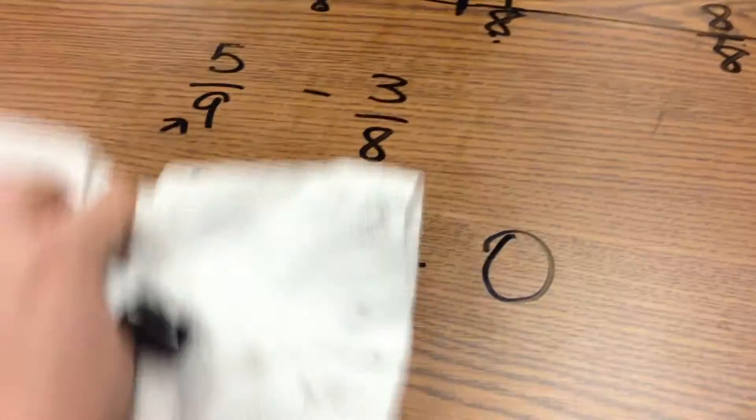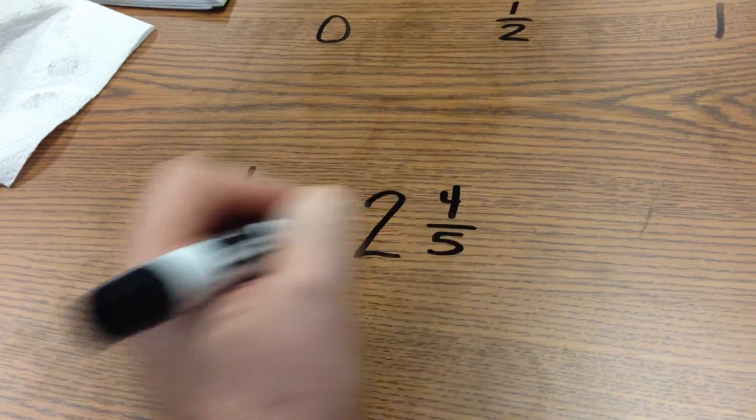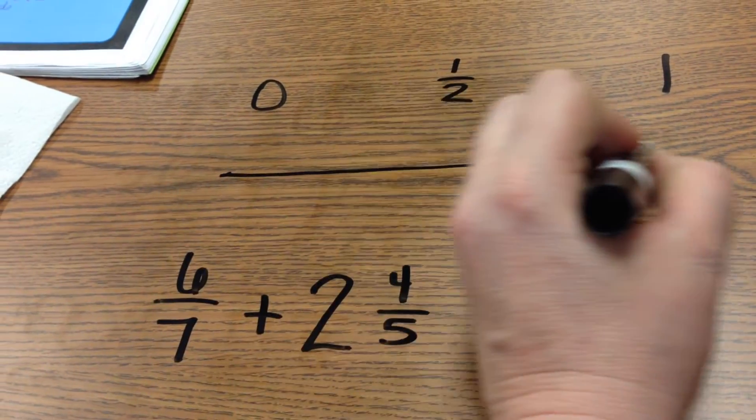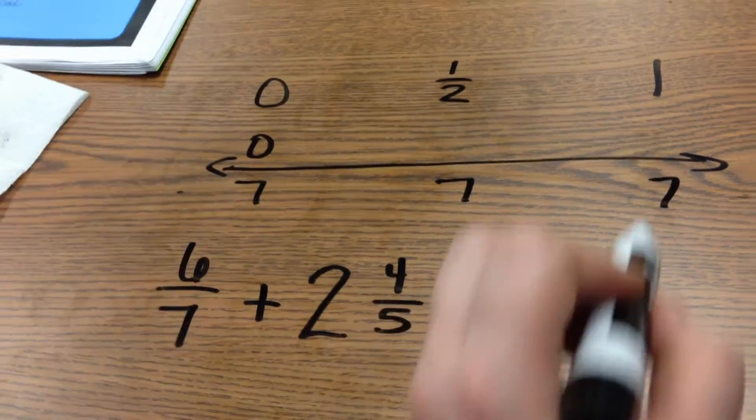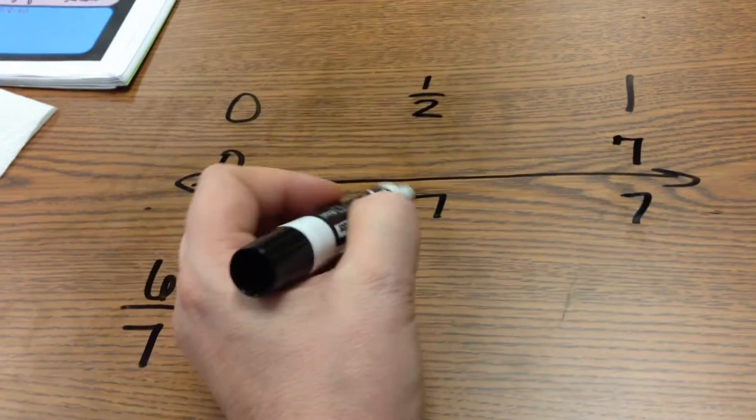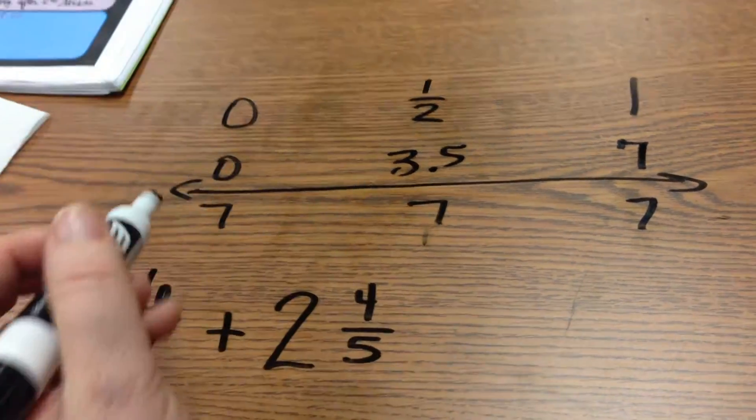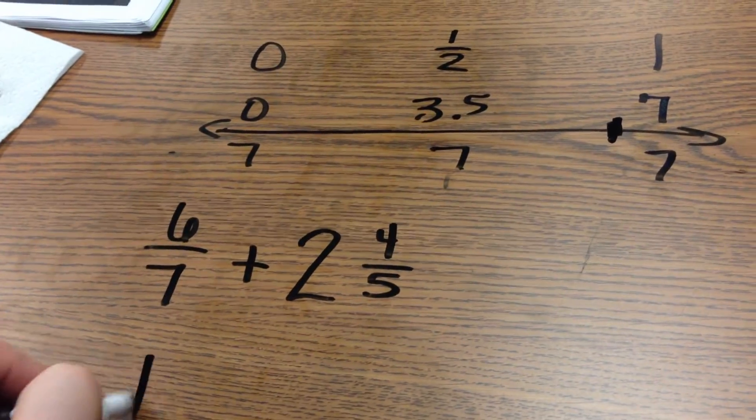So that would be how you would work one like number two. Number three is six-sevenths plus two-and-four-fifths. So now we're adding in some mixed numbers. Six-sevenths. If I look over here, and I make a number line with sevenths with my three benchmarks. Zero is equal to zero-sevenths. One whole would equal seven-sevenths. And then one-half, half of seven is three-and-a-half. So I'm looking at six, which is very close to seven-sevenths. So six-sevenths would round to one.